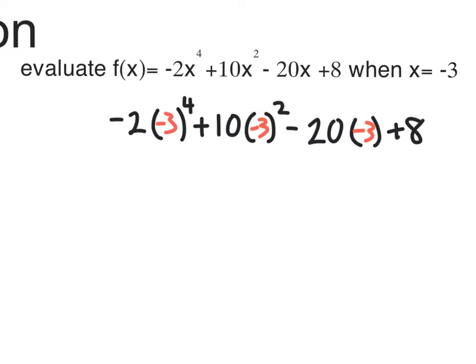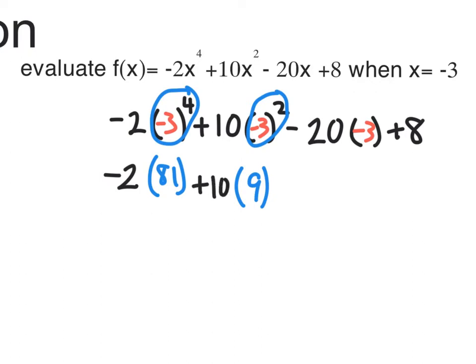We begin with the parentheses, but there's nothing to do inside. So we move on to exponents. Negative 3 to the fourth power is positive 81, and negative 3 to the second power is positive 9. Let me rewrite everything: we have the negative 2 that's in front of the positive 81, we have the plus 10 times 9.